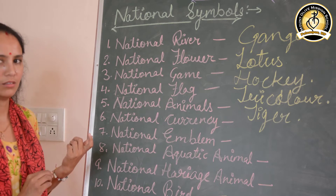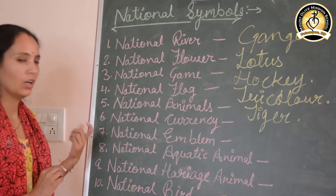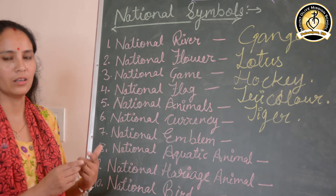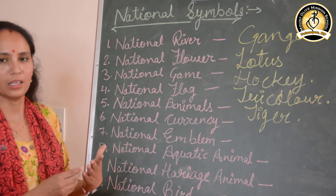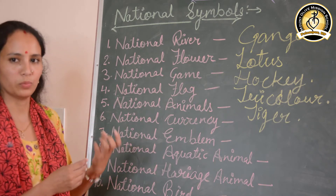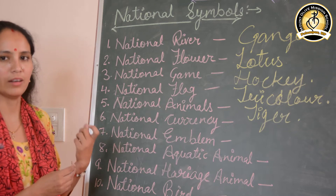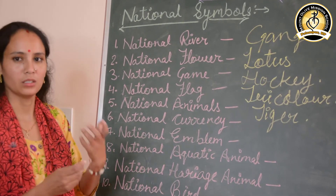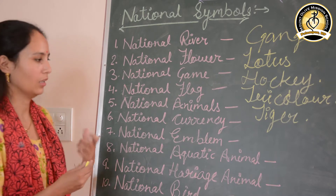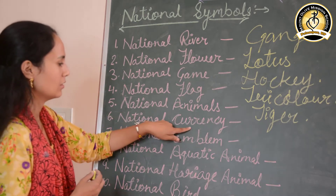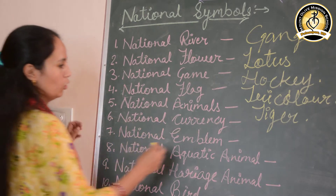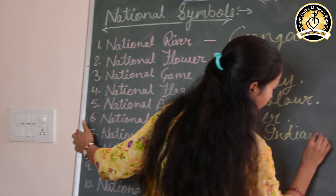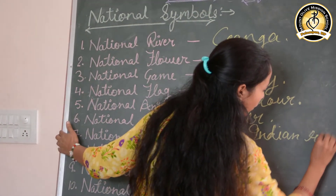Next is the national currency. National currency means the money we use to buy things in our country — we give rupees. This is the national currency. Our national currency is the Indian Rupee. Write down here: Indian Rupee.